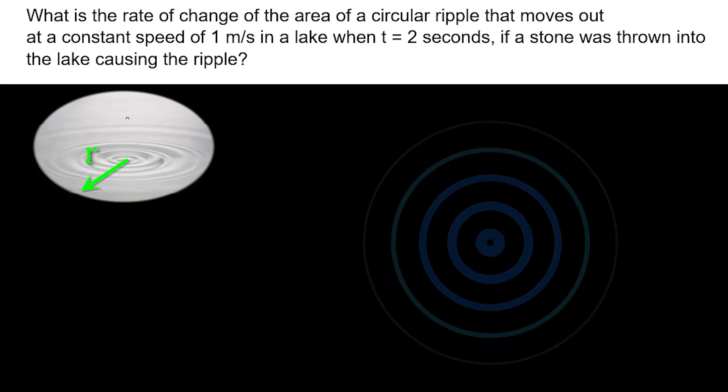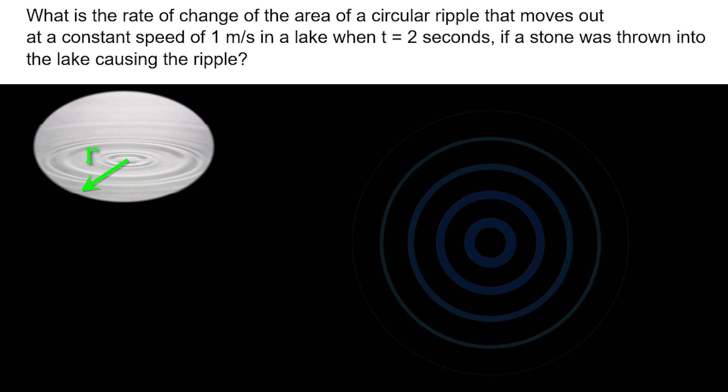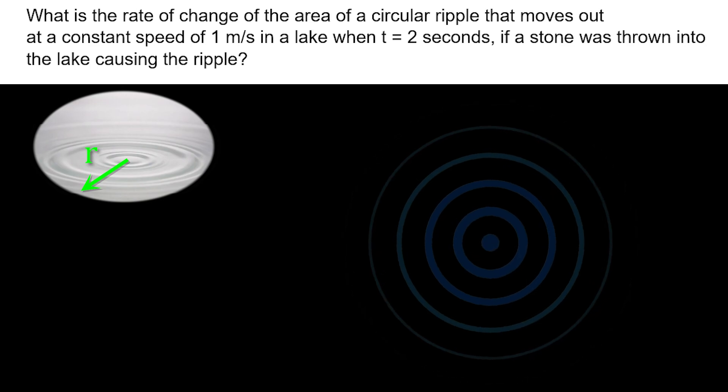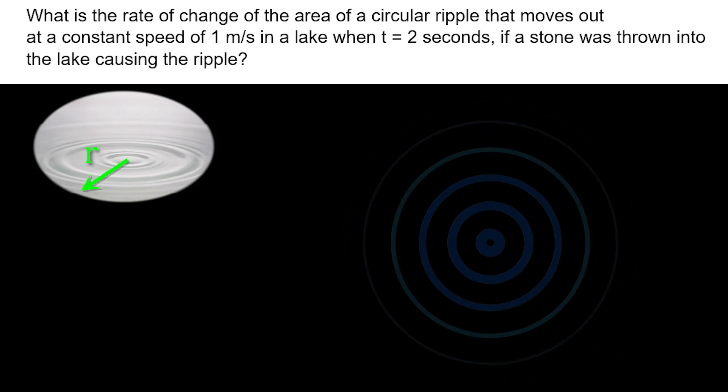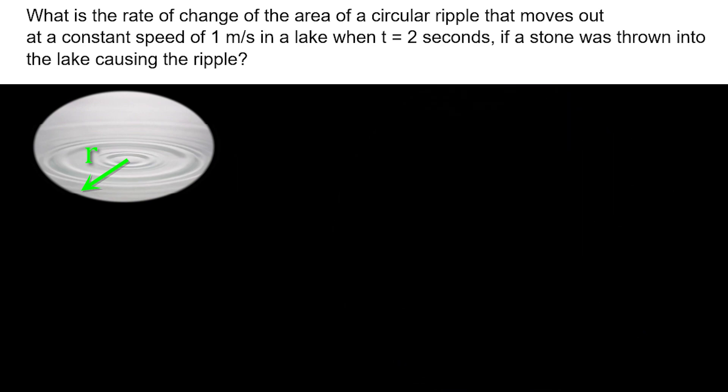If you call the radius of these concentric circles as R, and if the radius R increased at a rate of 1 m per second, can you find how fast the area enclosed by the circle is increasing after 2 seconds? Yes, we can easily find the answer by identifying and organizing the 4 key components we learned earlier.